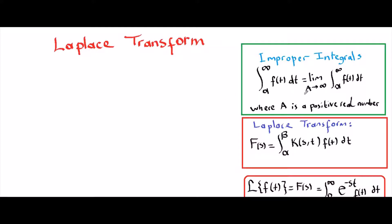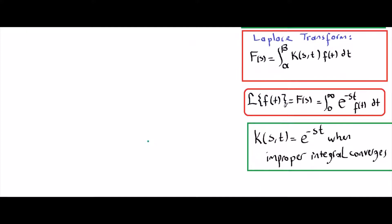The knowledge of improper integrals will be very helpful because Laplace transform requires taking an integral from zero to infinity. By definition, Laplace transform is f of s equals the integral from alpha to beta of k(s,t) times f(t) dt, where f(t) is the function we are transforming and k(s,t) is e to the negative st when the improper integral is converging. So Laplace of f(t) equals F(s), defined as the integral from zero to infinity of e to the negative st times f(t) dt. Here f(t) is the input and capital F(s) is the output.